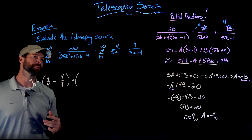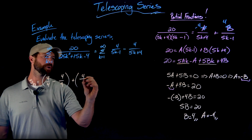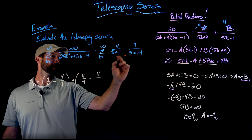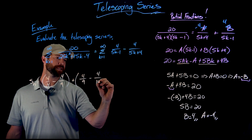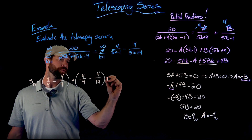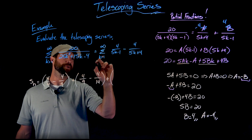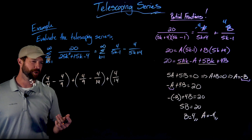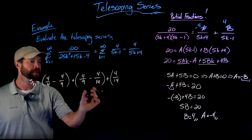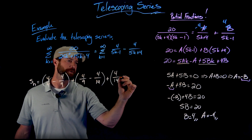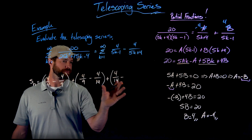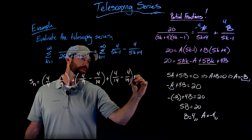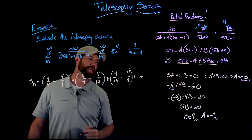We can already see the telescoping working — the negative four ninths cancels with the positive four ninths, the negative four fourteenths cancels with the positive four fourteenths, and so on. The pattern continues: for k equals three we have four over fourteen minus four over nineteen, and the cancellations propagate perfectly all the way down.